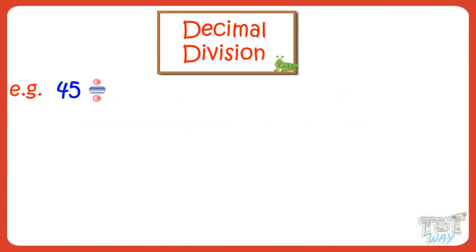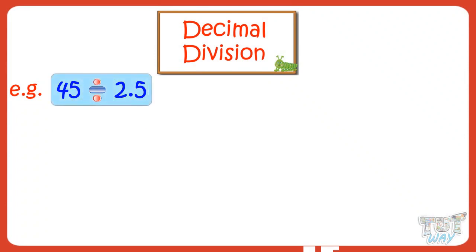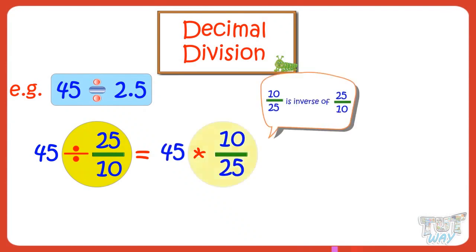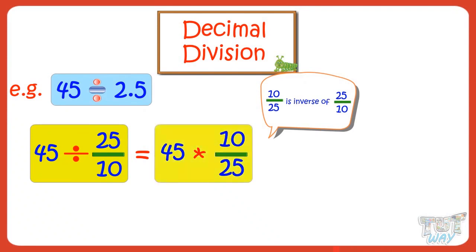We have to divide 45 with 2.5, where 45 is a whole number and 2.5 is a decimal number. Dividing 45 by 2.5 is the same as dividing 45 by 25/10. Here you need to learn that dividing with a fraction is the same as multiplication with its inverse. That is, dividing 45 by 25/10 is the same as multiplying 45 by 10/25, where 10/25 is the inverse of 25/10.